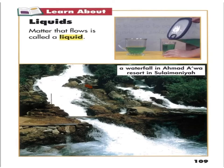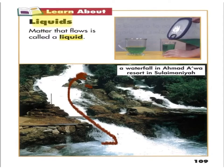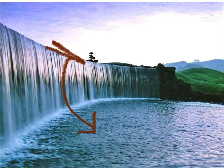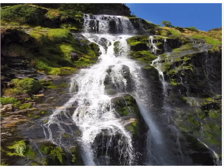Open page 109. Today I'm going to explain liquid to you. Liquid is a state of matter between solid and gas, and liquid is able to flow — meaning it flows from one place to another. Look at this picture: this is a waterfall. Water flows from one place to another, which means liquid is able to flow.